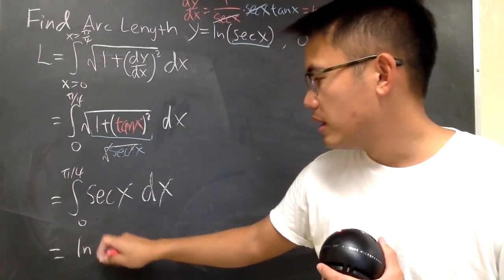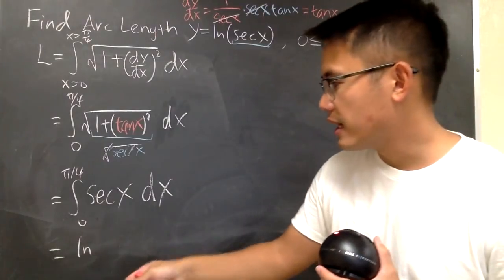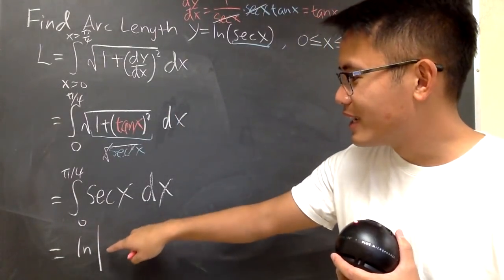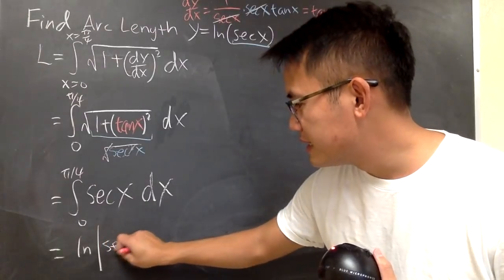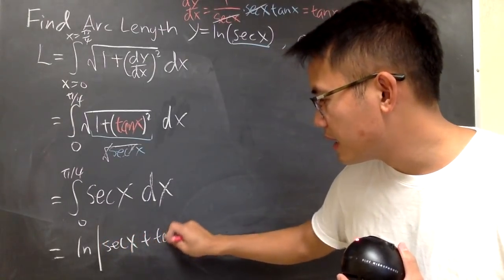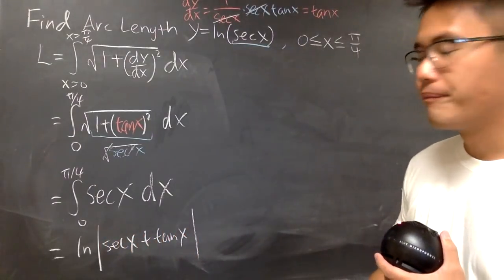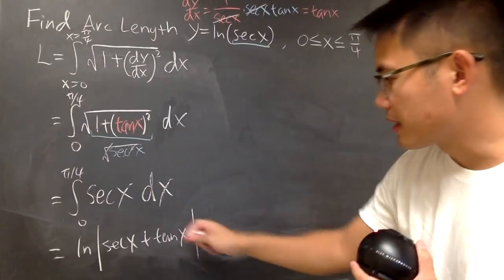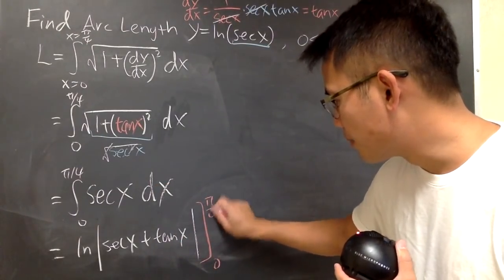So integrate that, you get natural log. You don't really need the absolute value in this case because everything is positive. I'll still put it down anyway. You get absolute value of sec(x) + tan(x), like this. And in this situation, you have to plug in numbers.